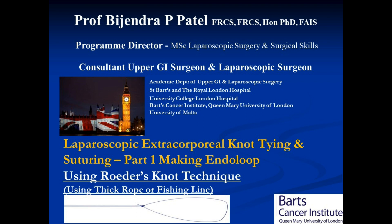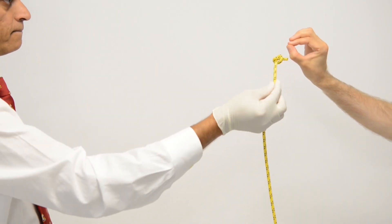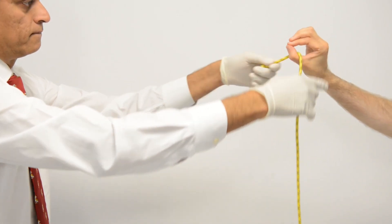Part 1. Practicing the Knot with Rope. Start by tying a knot at one end of the rope so as to simulate the needle end of a suture material.